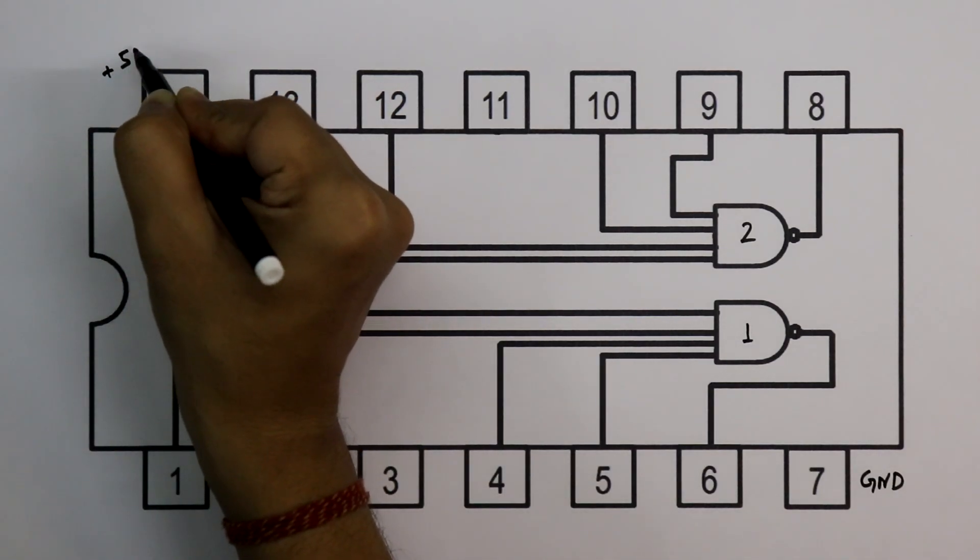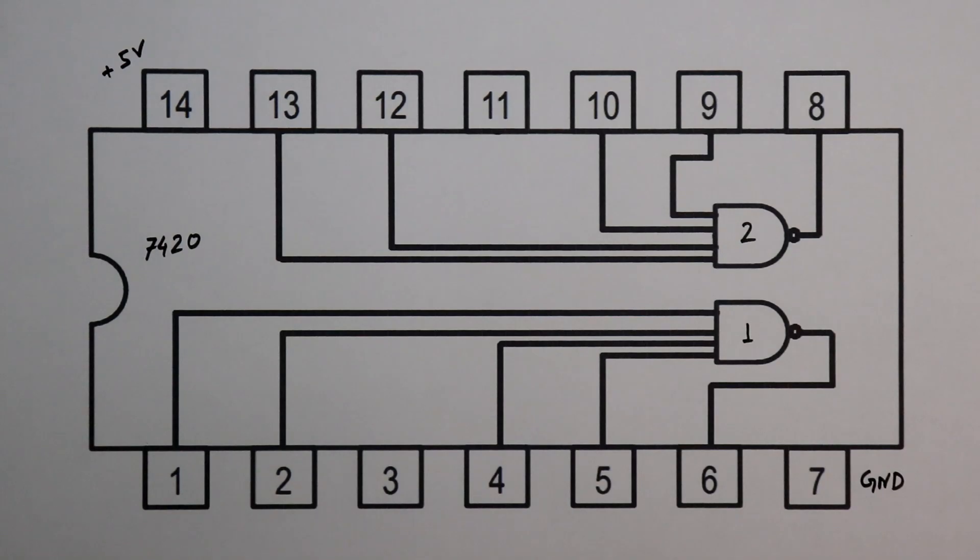We have to apply plus 5 volt. So this is the pin diagram of 7420. For the practical, I will use gate number 1. We are going to use pin number 1, 2, 4, 5 as inputs and pin number 6 as output.